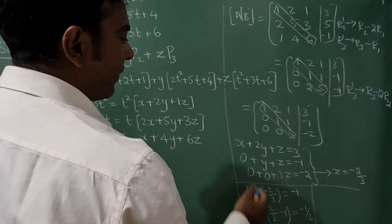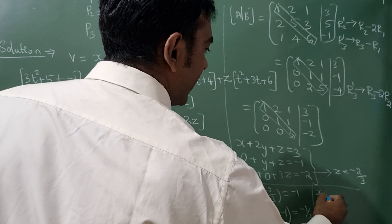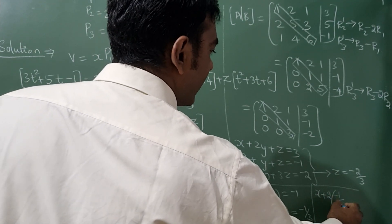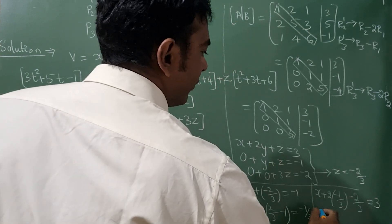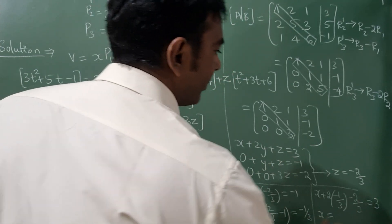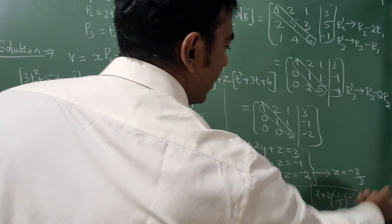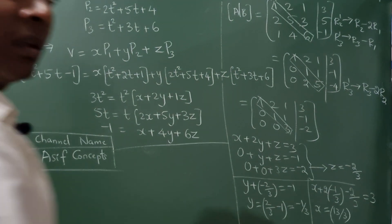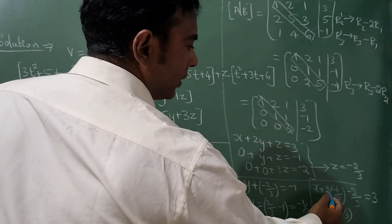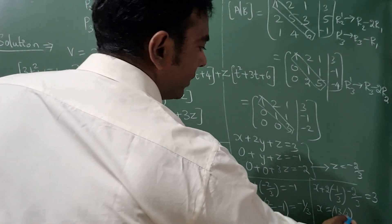Substitute z and y value here. x + 2·(-1/3) + (-2/3) = 3. From here, you will get x value. Take all these terms on the other side. So solving this, you will get x value as 13/3.